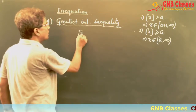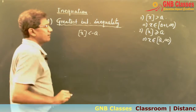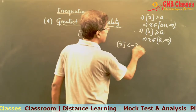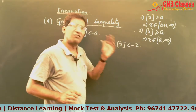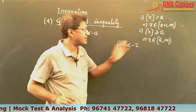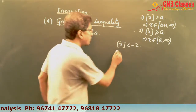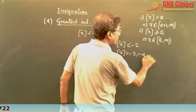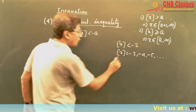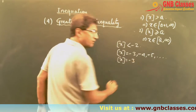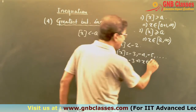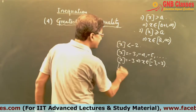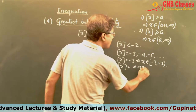Let us take ⌊x⌋ < −a. For example, we are taking ⌊x⌋ < −2. In that case, what is the first integer that ⌊x⌋ will take? Since it is less than −2, the first integer ⌊x⌋ will take is −3, then −4, then −5, and this goes on. Now when ⌊x⌋ is −3, think about it — that implies x belongs to [−3, −2).